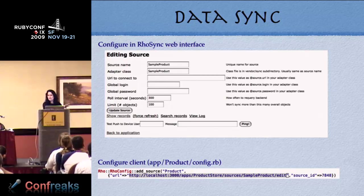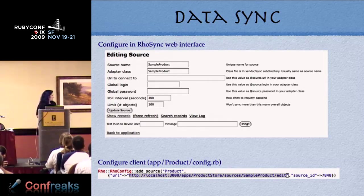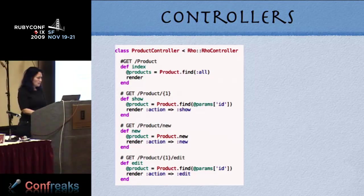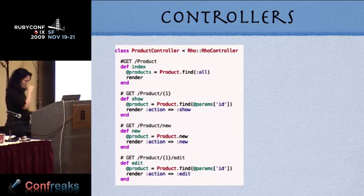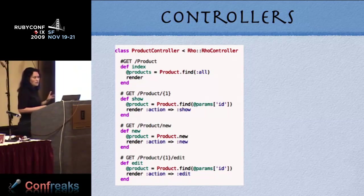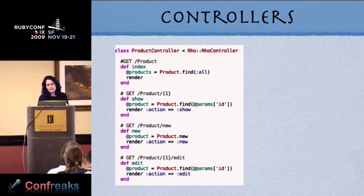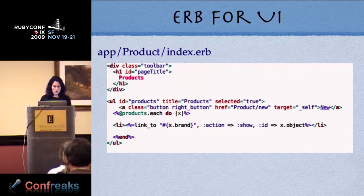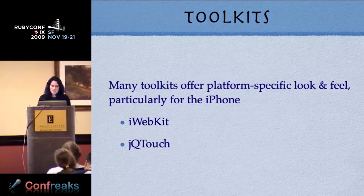If you're running your own RhoSync server, you configure the source adapter and configure the client to point to that source adapter, and then you're off and running. The controllers look very much like a Rails app — when you do product.find you can pass in parameters for any of those attributes. You get them in an array or singleton, then they get handed to your view and you deal with them in ERB just like you would in a Rails app.